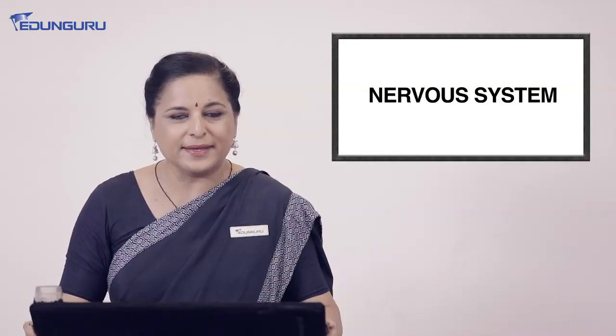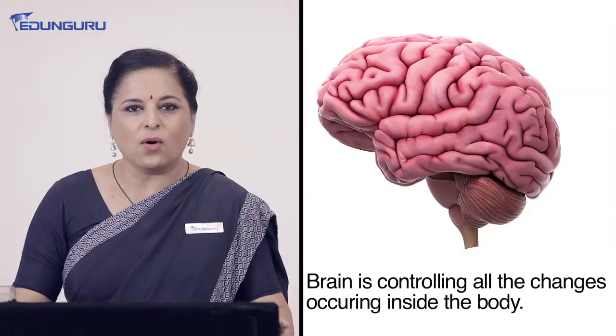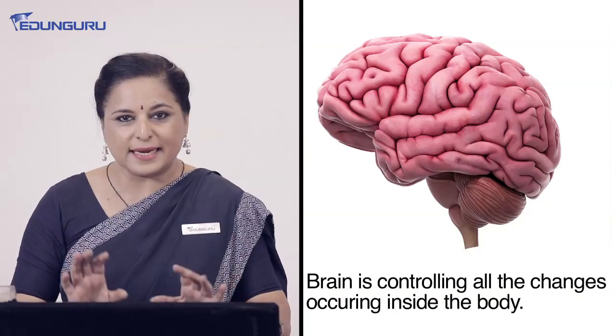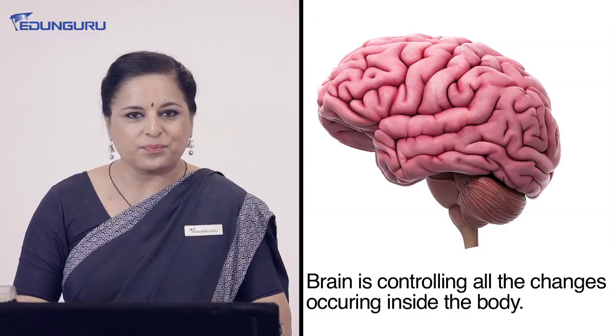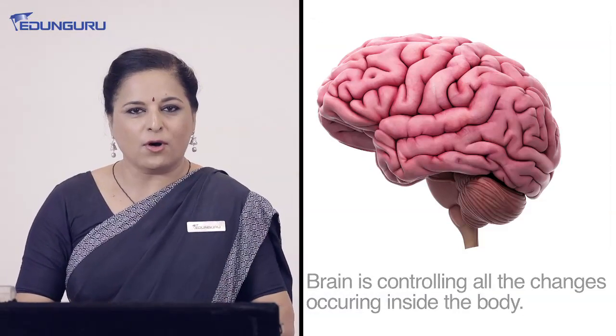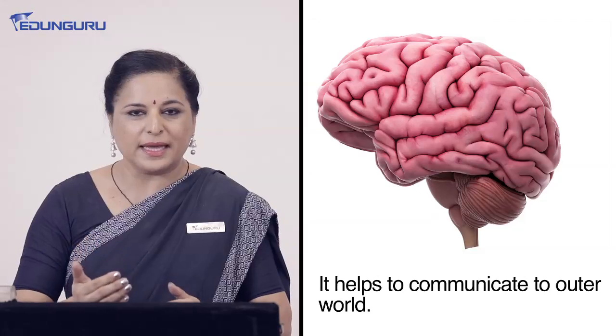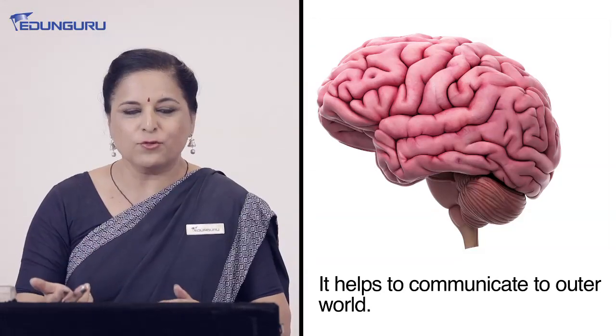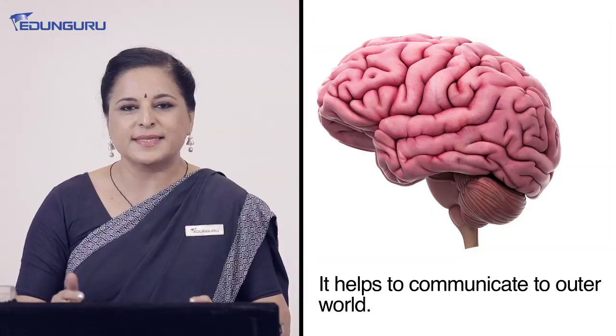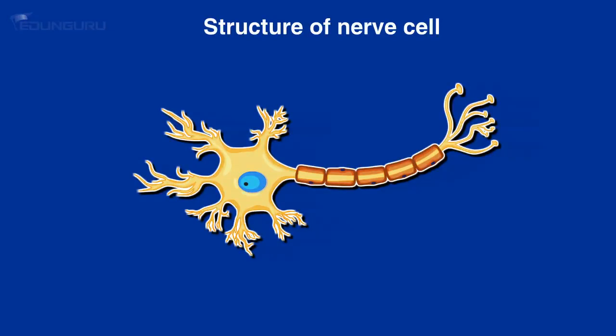Now what is the nervous system? We say that the brain is the boss. The brain is controlling all the changes occurring inside our bodies. And not only that — the brain is responsible for letting us communicate with the world in the form of receptors. Now what are receptors? You already know the structure of the nerve cell. The nerve cell is the longest cell in the human body, and it is a very long fiber-like structure.